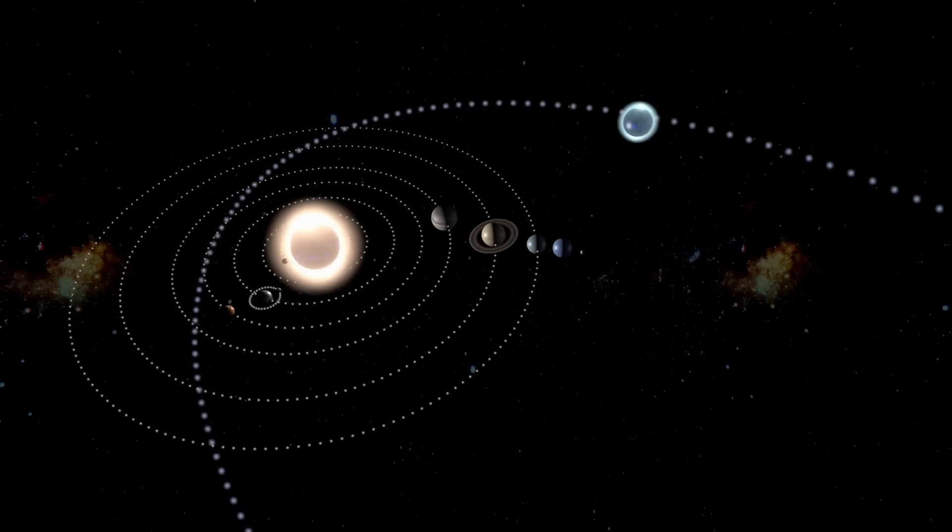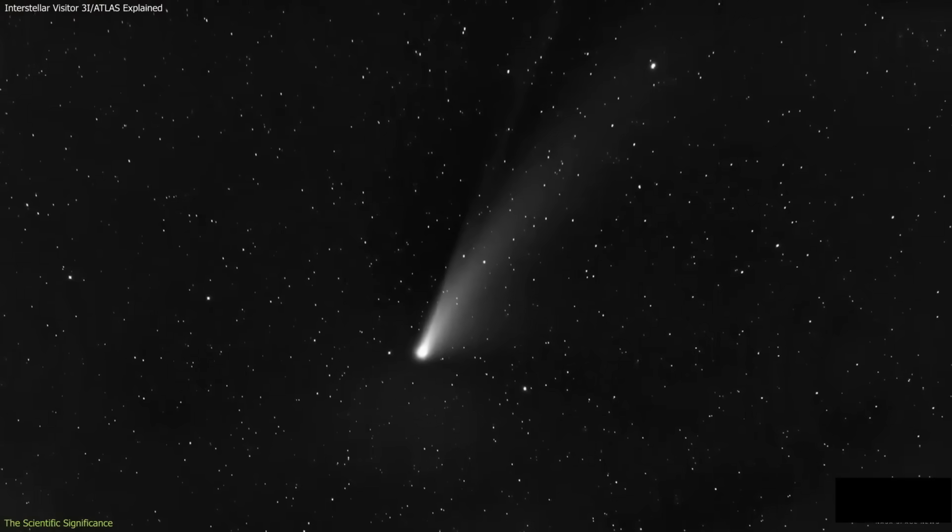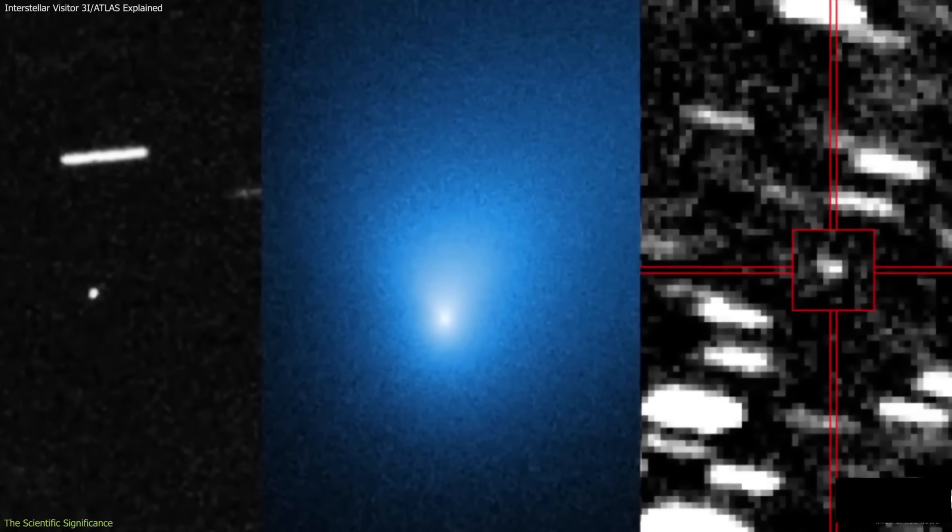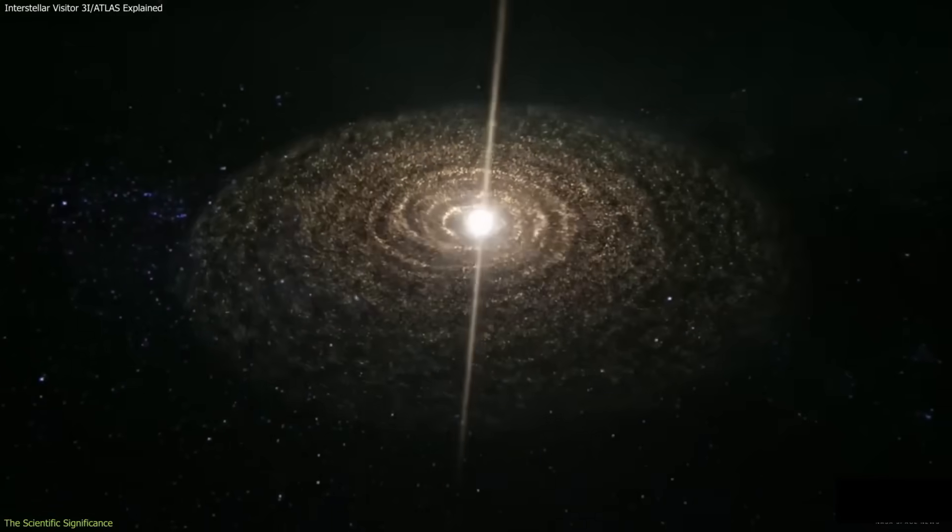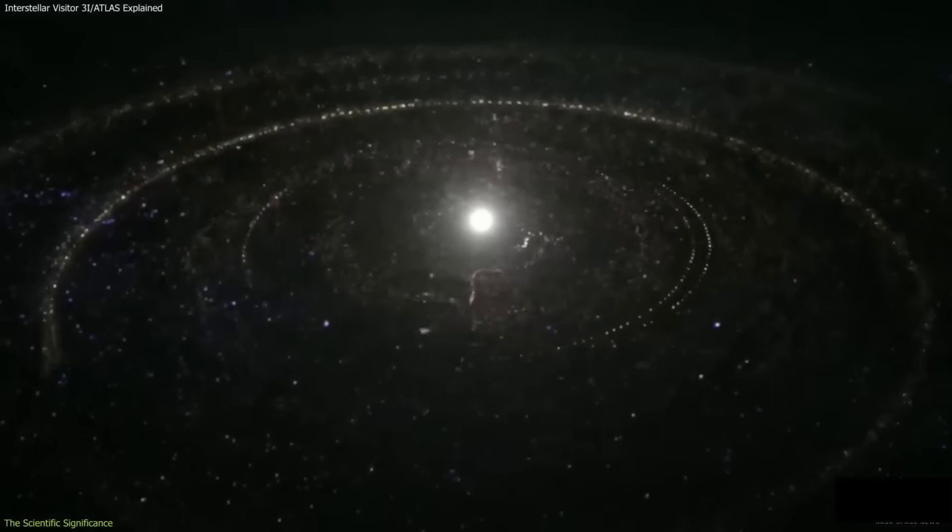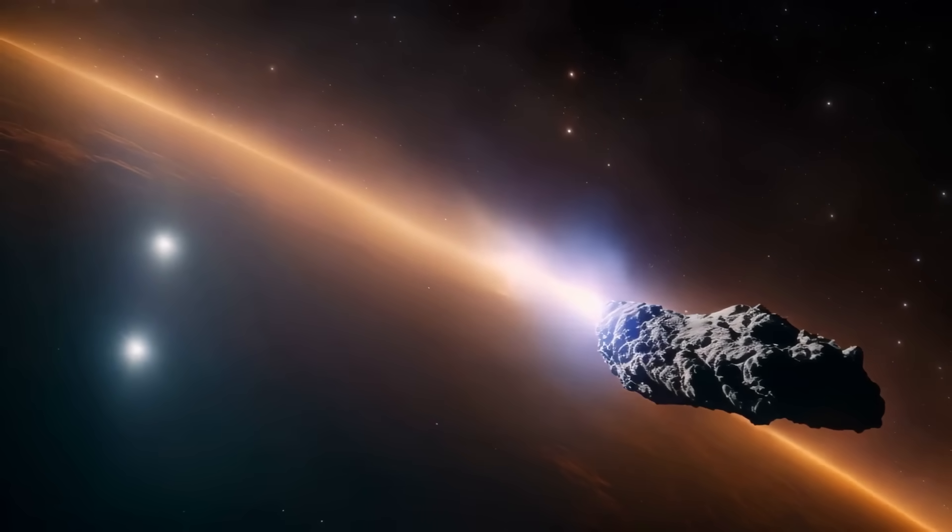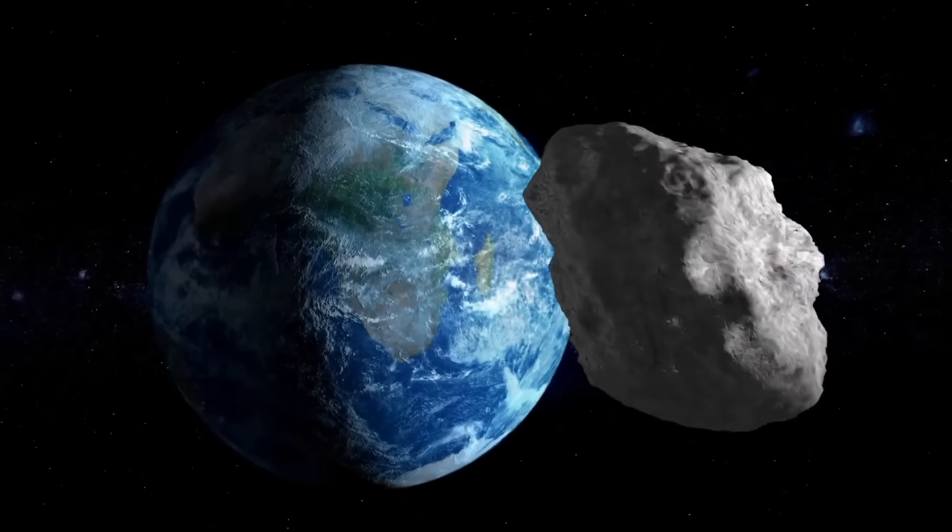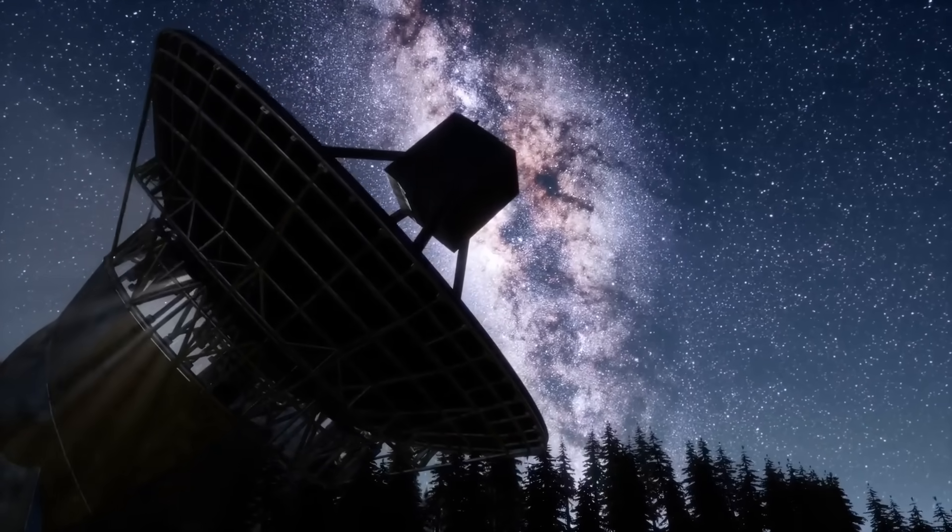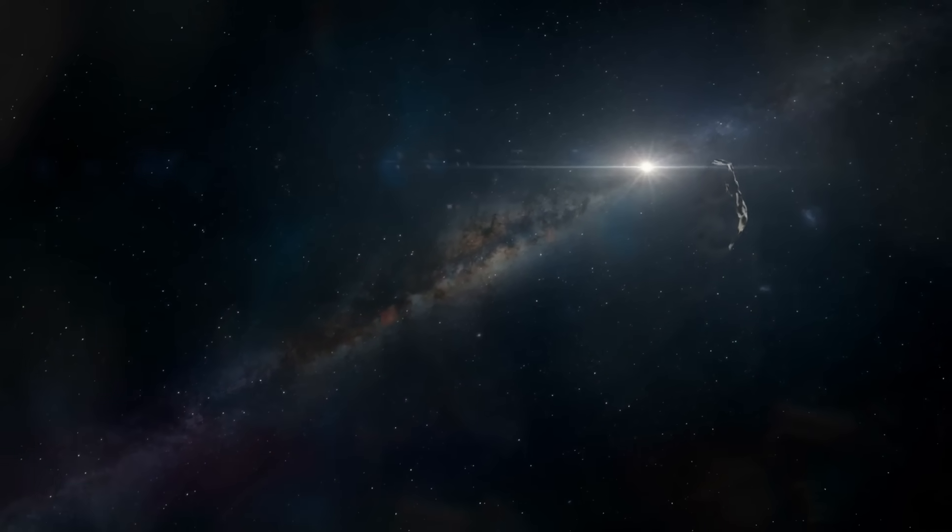The symbolism is impossible to miss. An emerald interstellar wanderer under the gaze of our finest observatories, while defense nodes quietly posture. This reads like prologue, yet it is not fiction. It is a live experiment in how a young technological species responds to the unknown. Whether 3i Atlas is a natural relic, a cosmic messenger, or a phenomenon we lack words for, it forces a recalibration. The galaxy is more varied than our tidy priors allow, and the decisive moment lies ahead.